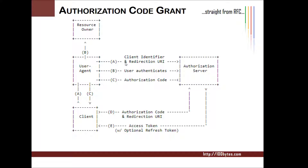Basically, this flow is called a three-legged flow. The first time when you are sending the client ID and redirect URI, it authenticates the user and asks for consent from the user. Once the user provides the consent, it has to return back the authorization code. This redirection URI is a callback from the authorization server to the user agent where it can provide the authorization code.